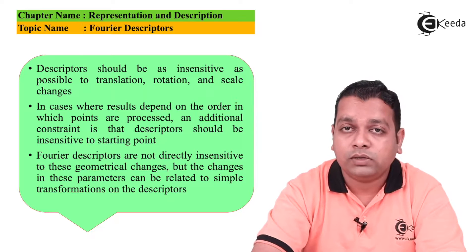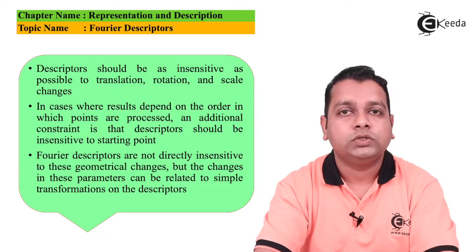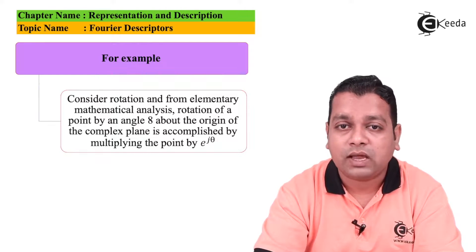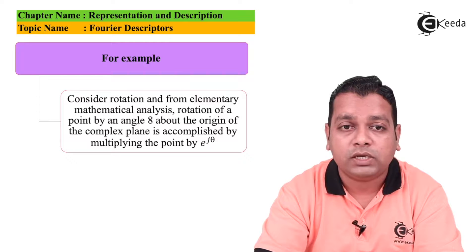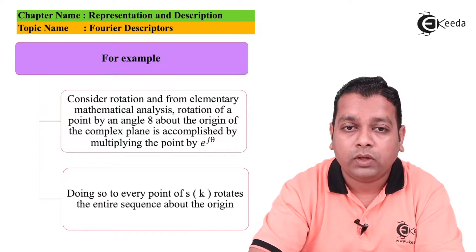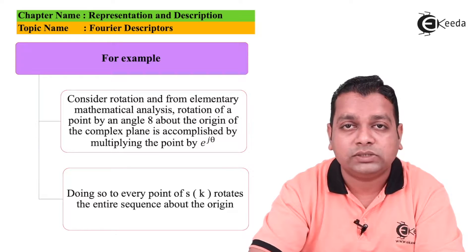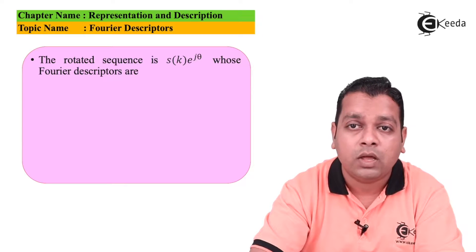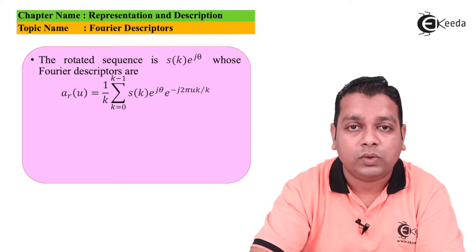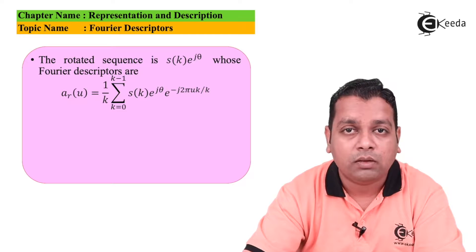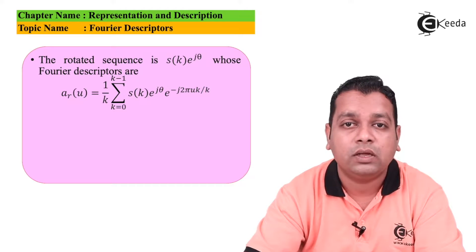The Fourier descriptors are not directly insensitive to these geometrical changes, but the changes in these parameters can be related to simple transformations on the descriptors. For example, considering rotation: from elementary mathematical analysis, rotation of a point by angle θ about the origin of the complex plane is accomplished by multiplying the point by e^{jθ}. Doing so, every point of s(k) rotates the entire sequence about the origin. The rotated sequence s(k)·e^{jθ} has Fourier descriptors a_r(u) computed as (1/K) · Σ_{k=0}^{K-1} s(k) · e^{jθ} · e^{−j2πuk/K},